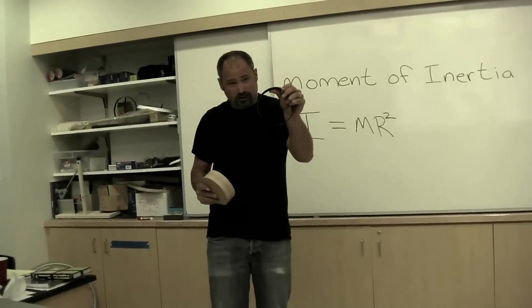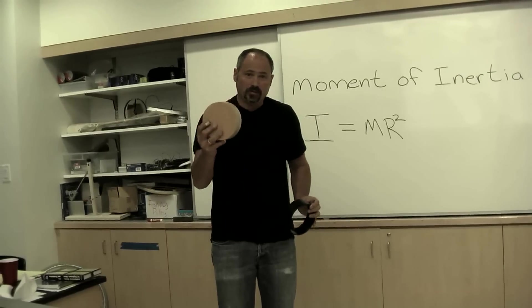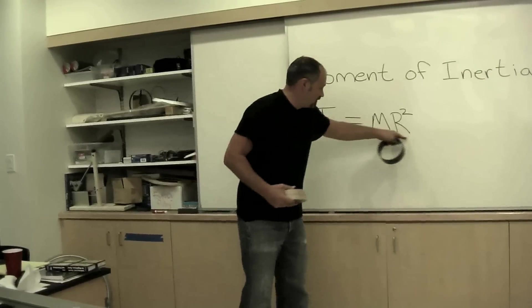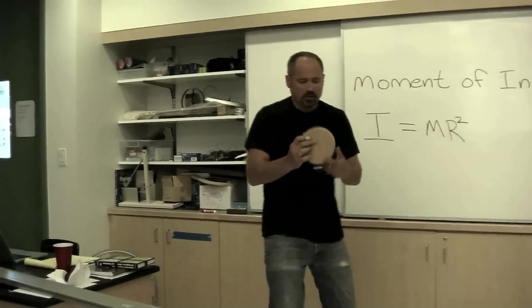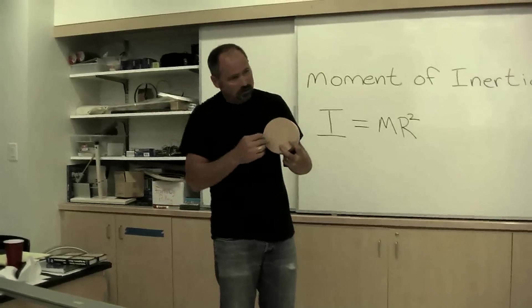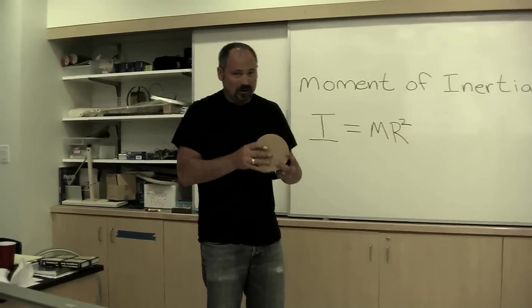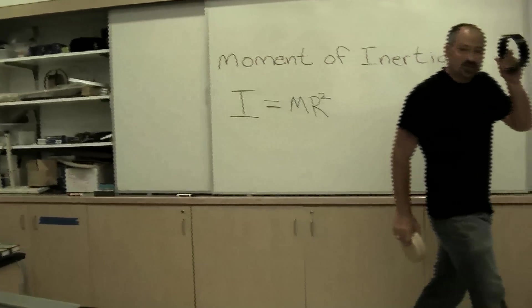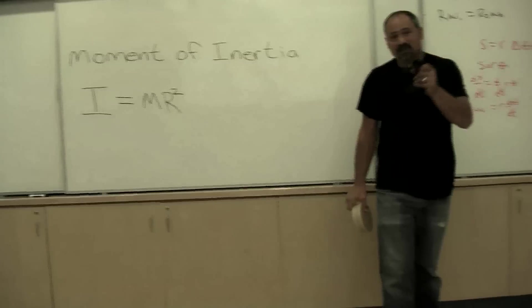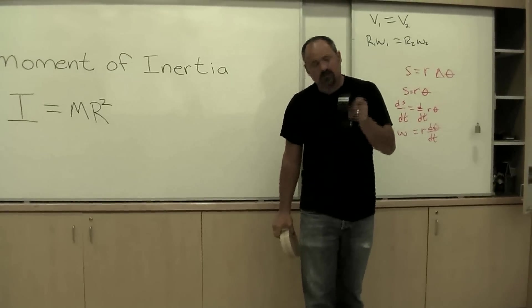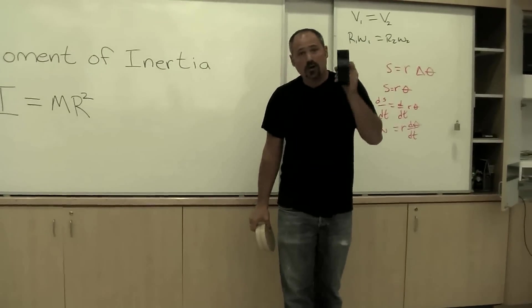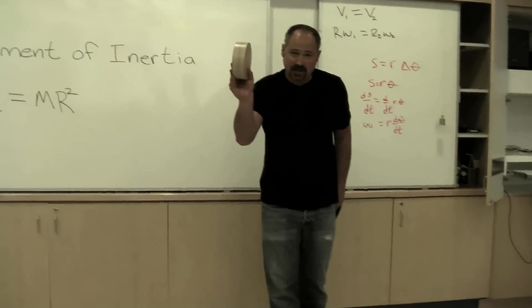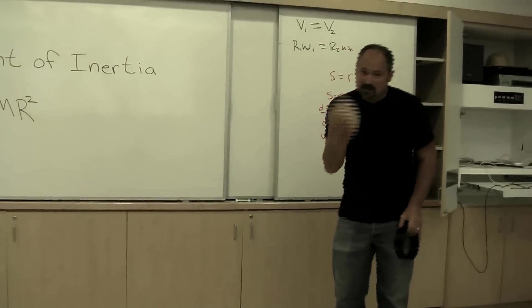So clearly this one has a larger moment of inertia than this one, because all of its mass is at this full distance R squared, whereas for this guy it's distributed equally. So you have to do some average, but clearly the moment of inertia is less. This guy resists rotational acceleration more than this guy, so we expect this guy to win the race.